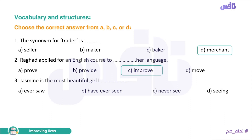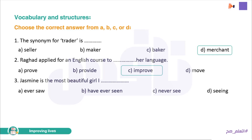Number three. 'Jasmine is the most beautiful girl I have ever seen.' We know here we use the present perfect with superlative sentences — comparing more than two. 'This is the most beautiful girl I have ever seen' — present perfect with superlative.